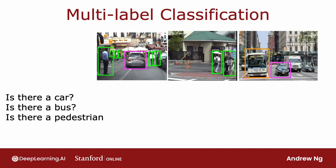So in this case, there is a car, there is no bus, and there is at least one pedestrian. Or in this second image, no cars, no buses, and yes to pedestrians. And yes car, yes bus, and no pedestrians.